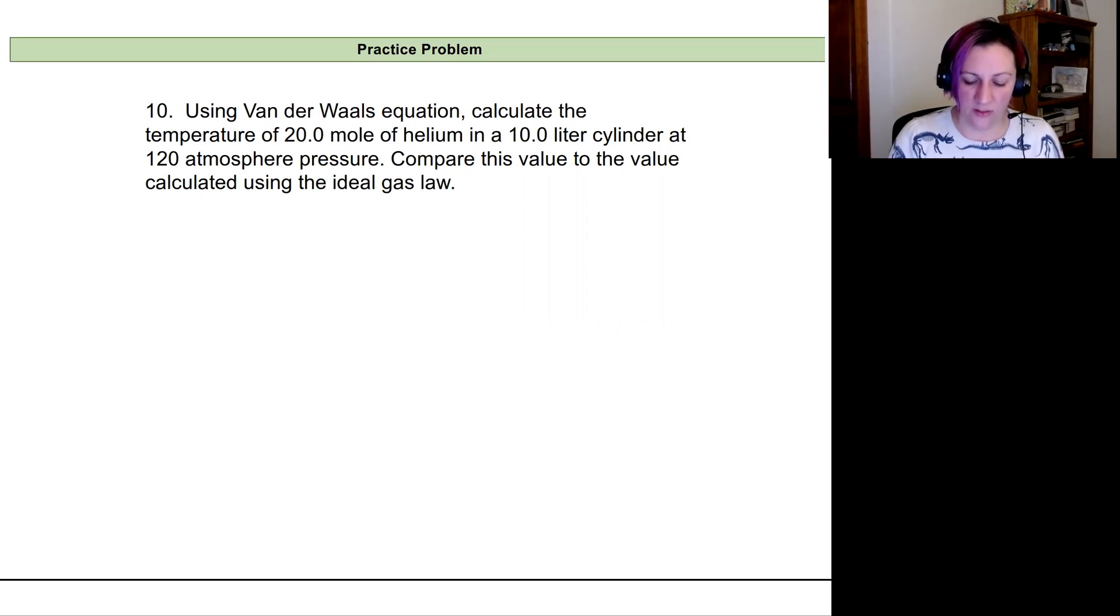So our information that we're given is that we have helium. We have 20 moles. We have a 10 liter cylinder and it's at 120 atmospheres of pressure. So our ideal gas law, we're going to solve for temperature. So our PV equals nRT becomes temperature is equal to pressure times volume divided by the moles divided by R.